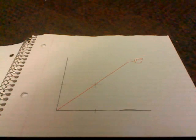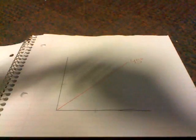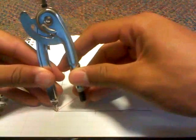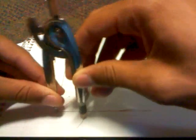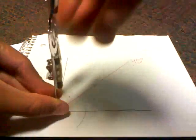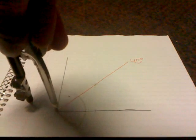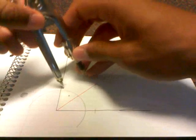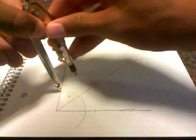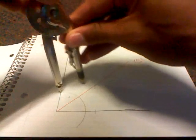And then after that, we're going to draw a circle and then draw another circle with the same radius from this different point.